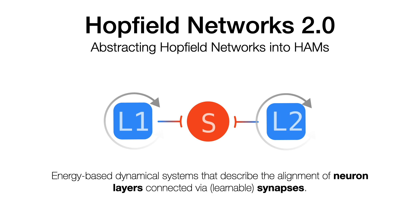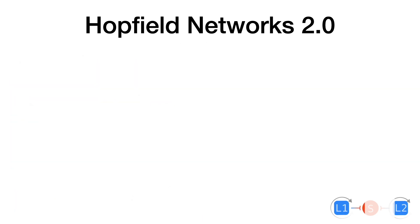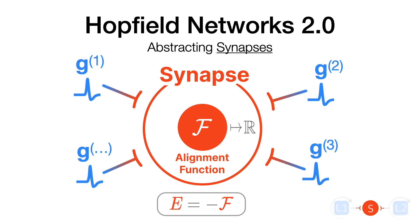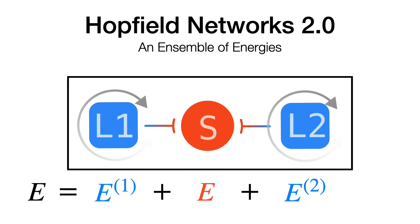The neuron layers and the synapses are the fundamental building blocks of the energy of our abstraction. We model the layer as a collection of neurons having hidden state x and producing activations g. These activations are fully defined by a Lagrangian, which also makes it possible to define the energy of every layer in our system. Likewise, we can also define an energy on the synapse, whose fundamental operation is to simply align the activations of the layers it connects. The energy of the synapse is then just the negative of the alignment function. So we can define the energy for every layer component and every synapse component, and the total energy of the system is simply the sum of each component's individual energies.